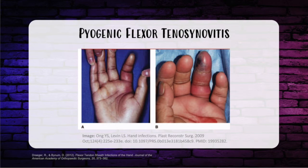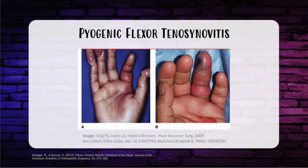Pyogenic flexor tenosynovitis is an infection of the flexor tendon sheath. The key thing to remember is the four cardinal signs: number one, fusiform swelling of the digit; number two, partially flexed posture of the digit; number three, tenderness over the flexor tendon sheath; and number four, pain on passive extension of fingers. The more cardinal signs present, the higher the likelihood of flexor tenosynovitis.